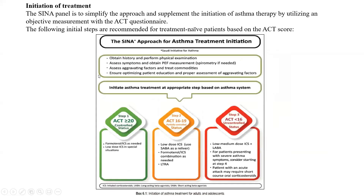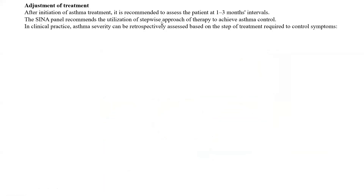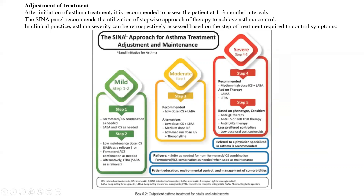After initiation, you should follow up at one to three month intervals. The SENA panel recommends the utilization of a stepwise approach. In this stepwise approach, mild asthma is treated with steps one and two, moderate asthma with step three, and severe asthma requires treatment with steps four and even five.